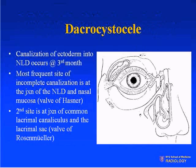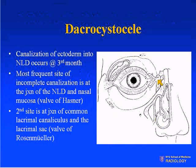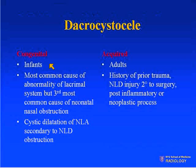A dacrocystocele involves canalization of the ectoderm into the nasal lacrimal duct, typically occurring at the third month. There are two sites of incomplete canalization. The most frequent is the junction of the nasal lacrimal duct and the nasal mucosa, typically at the level of the inferior turbinate. The second most common is the common lacrimal canaliculus at the level of the lacrimal sac. In the congenital form they occur in infants, forming as a cystic dilatation of the nasal lacrimal apparatus secondary to obstruction.